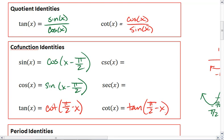And in fact, if you really wanted to, you could rewrite these cofunction identities up above as pi over 2 minus x and pi over 2 minus x.